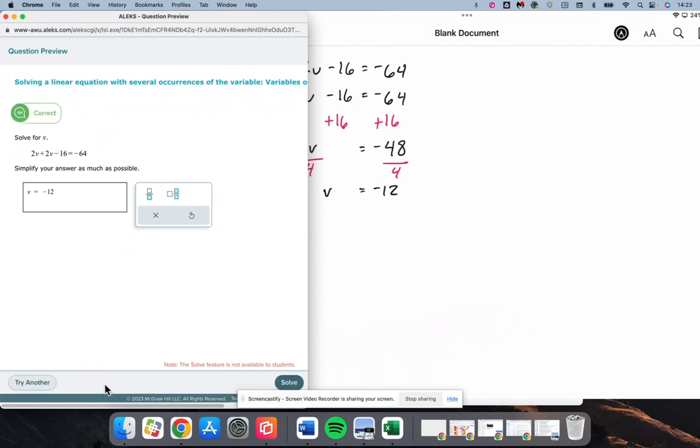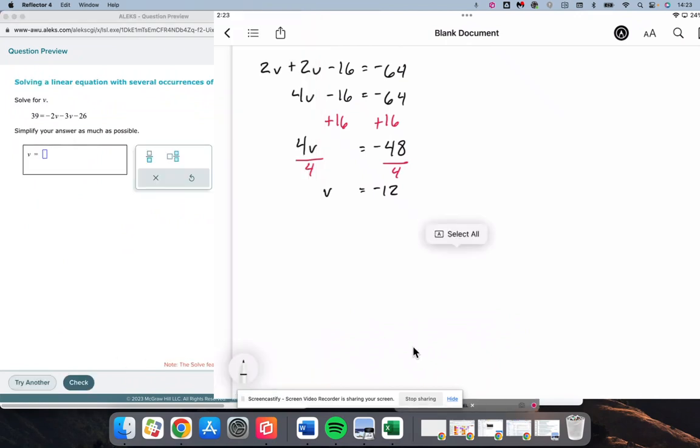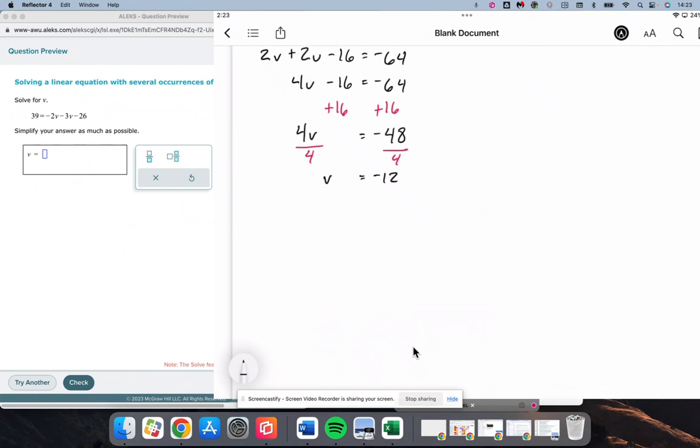And we're going to get v is equal to negative 12. All right. Better without a typo. Okay. Next, we have, and I forgot to write my line down the middle on that one. We have 39 is equal to negative 2v minus 3v minus 26.